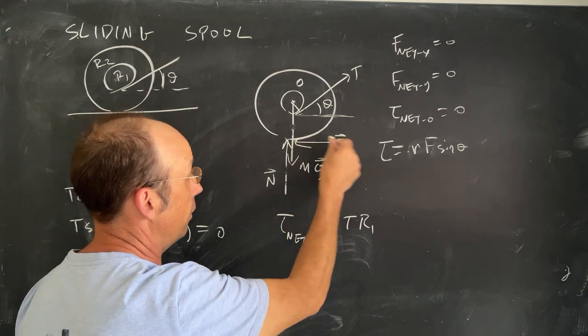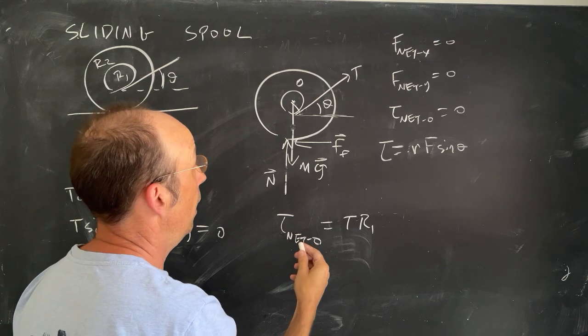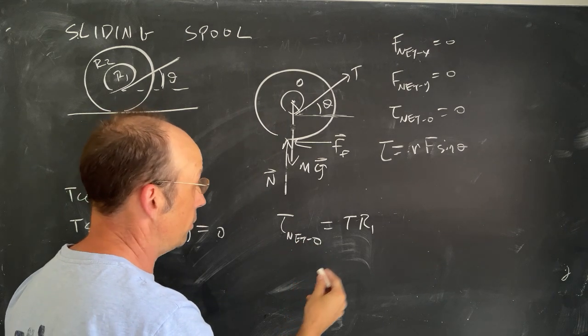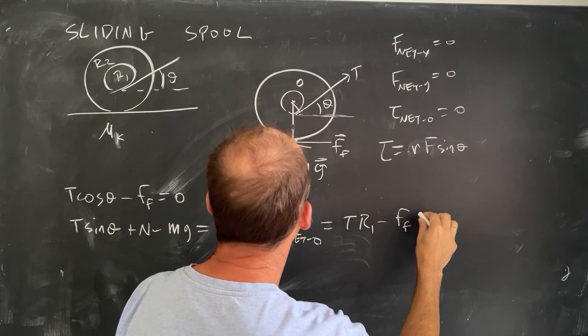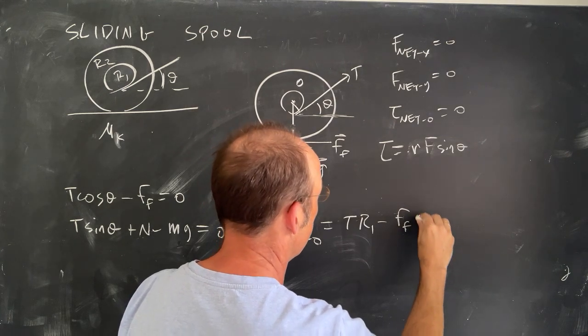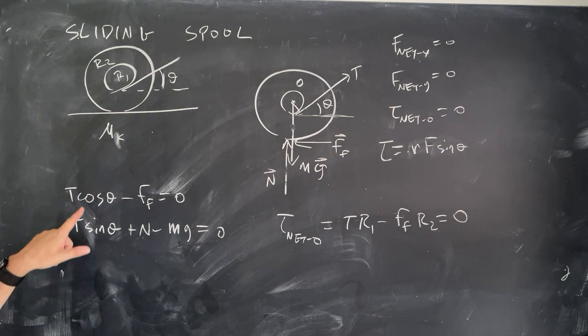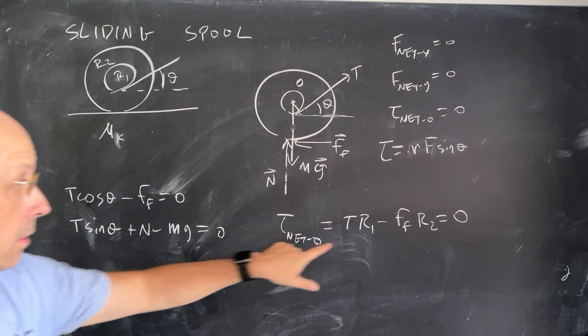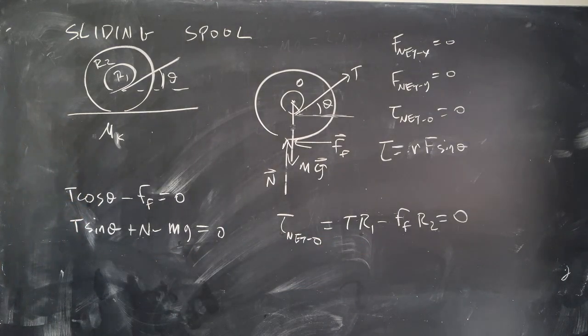Then I have the frictional force pushing this way, and it's going to exert a torque of negative direction minus the frictional force times R2. And that's equal to zero. Okay. So I have three equations. X equation. Y equation. Torque equation. And I want to find theta.